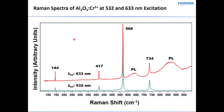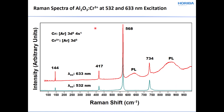Here are spectra consisting principally of Raman bands — Raman spectra of corundum aluminum oxide with chromium present as an impurity. These spectra were obtained at 532 and 633 nm excitation. The Raman bands are labeled at 144, 417, 568, and 734 cm⁻¹ on a Raman shift scale. We also see some photoluminescence peaks. We know they're photoluminescence because they're not present at the same Raman shift in both spectra. They originate from chromium present in the material.